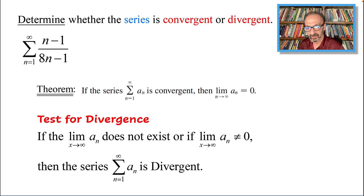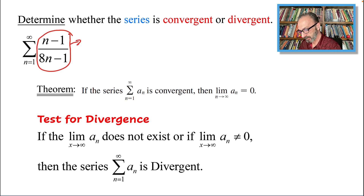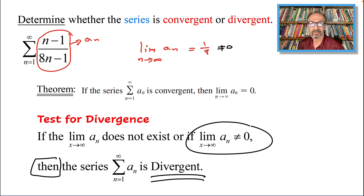We also know that the Test for Divergence says the following: if the limit of a sub n does not exist, or if the limit of a sub n does not equal 0 — which in our case it was equal to 1/8 — then the series is divergent. This is a sub n, and we found that the limit of a sub n as n approaches infinity is equal to 1 over 8, and that was not equal to 0. So by this theorem, the series is divergent.